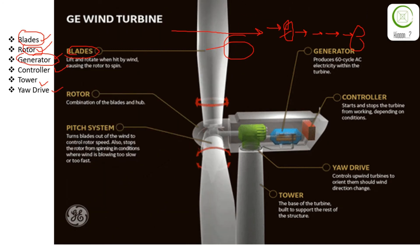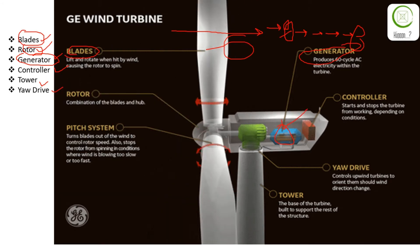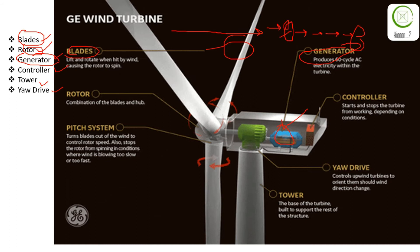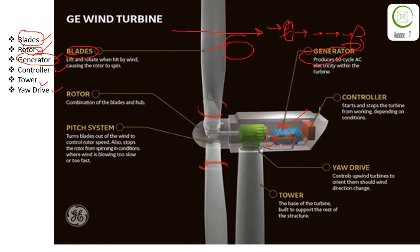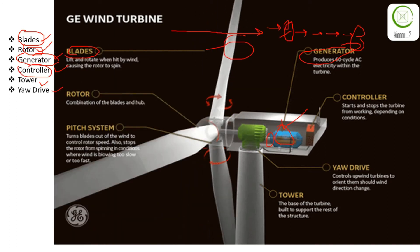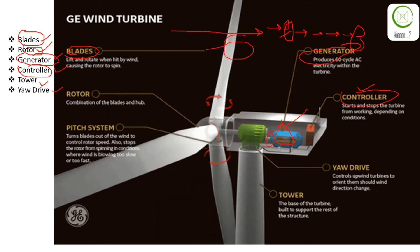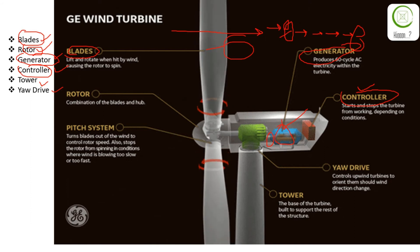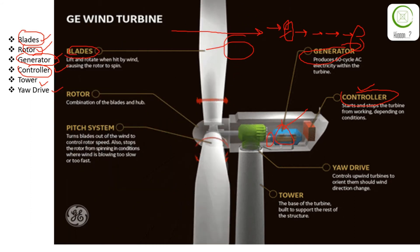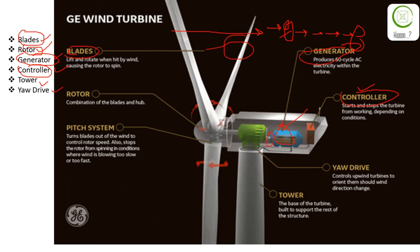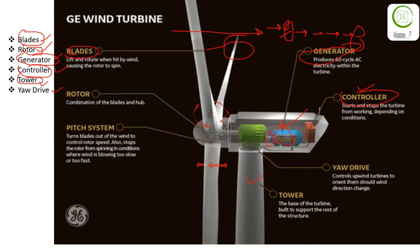The third component is the generator. The basic purpose of the generator is to generate electricity when it receives rotation from the blades or rotor. The fourth component is the controller. The controller basically works as a safety switch which turns the wind turbine on or off during wind storms or undesirable conditions.